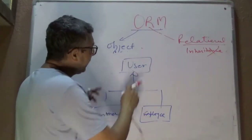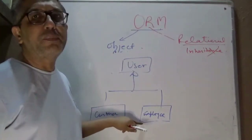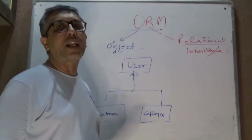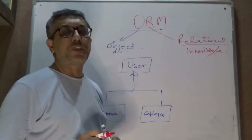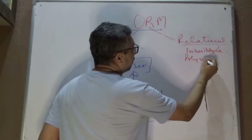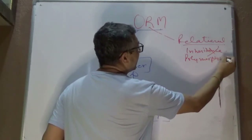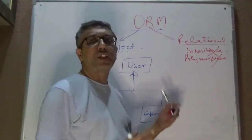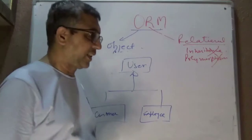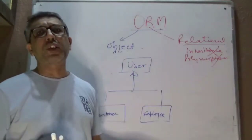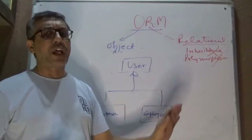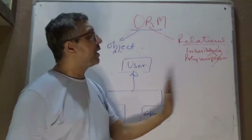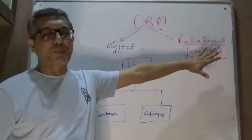Similarly, you might work with a handle of type User but the underlying object might be Employee. It might behave like an Employee or a Customer based on the underlying concrete implementation — that's polymorphism. These concepts don't exist in SQL RDBMS databases; in those, all data is represented as tables.